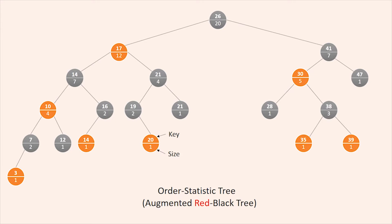At any node, the size of the subtree is: x.size = x.left.size + x.right.size + 1. We do not require keys to be distinct in an order statistic tree.